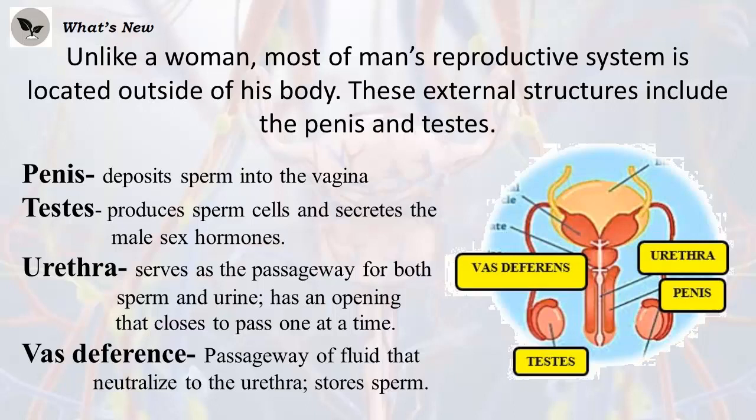Urethra: serves as the passageway for both sperm and urine; has an opening that closes to pass one at a time. Vas deferens: passageway of fluid that neutralizes to the urethra; stores sperm.